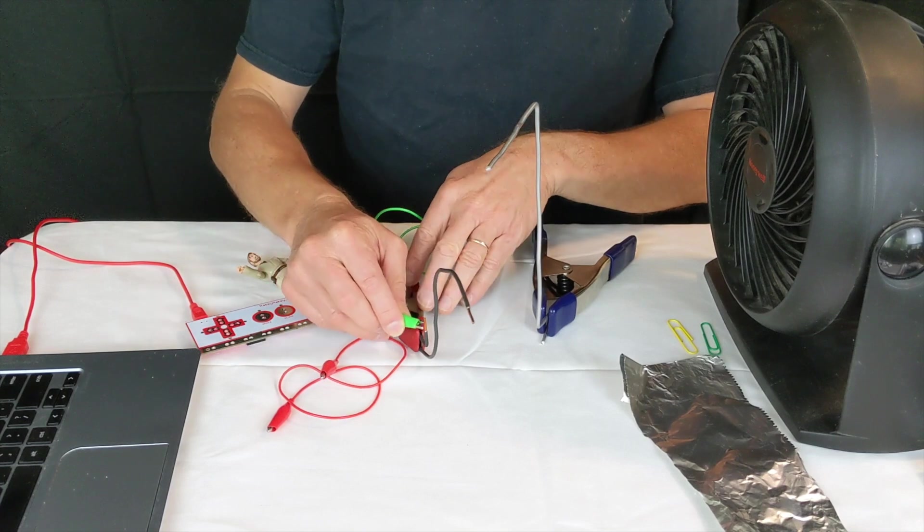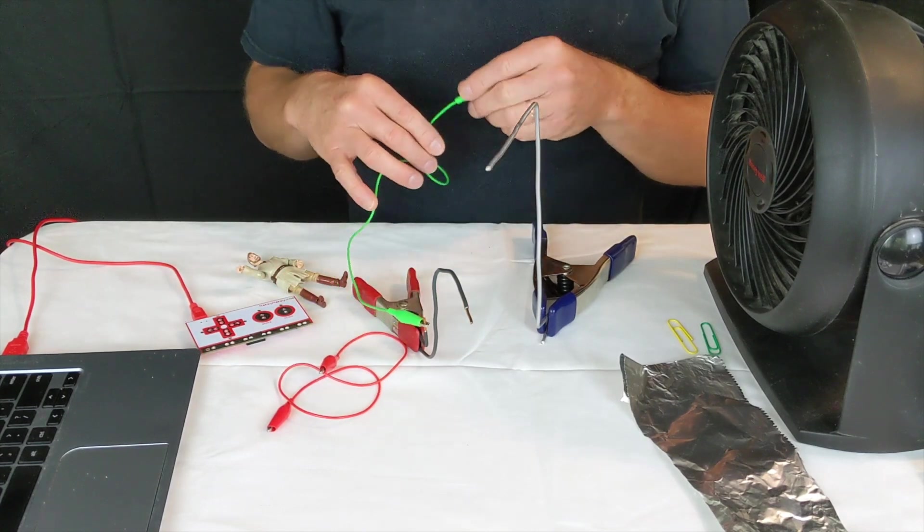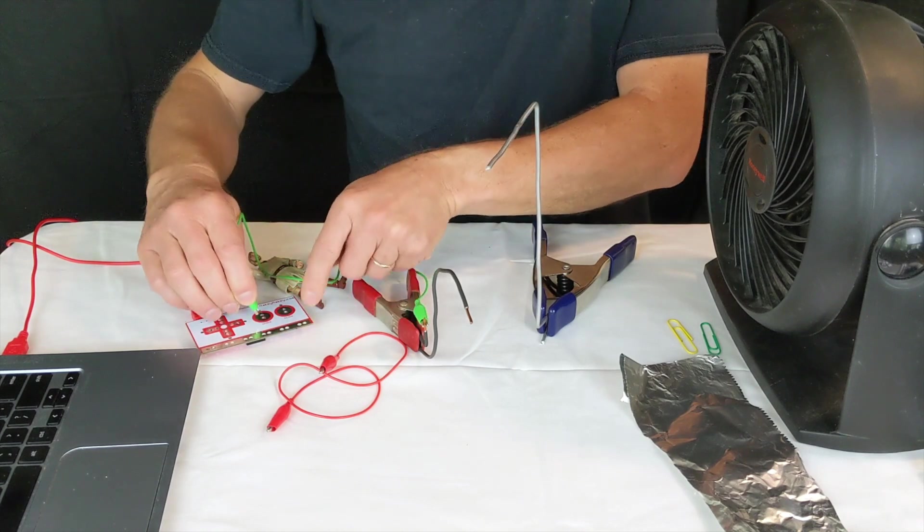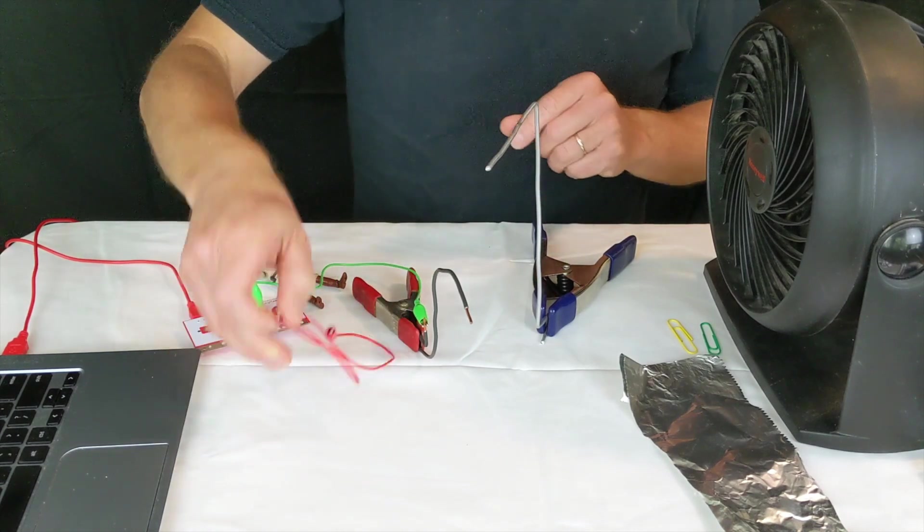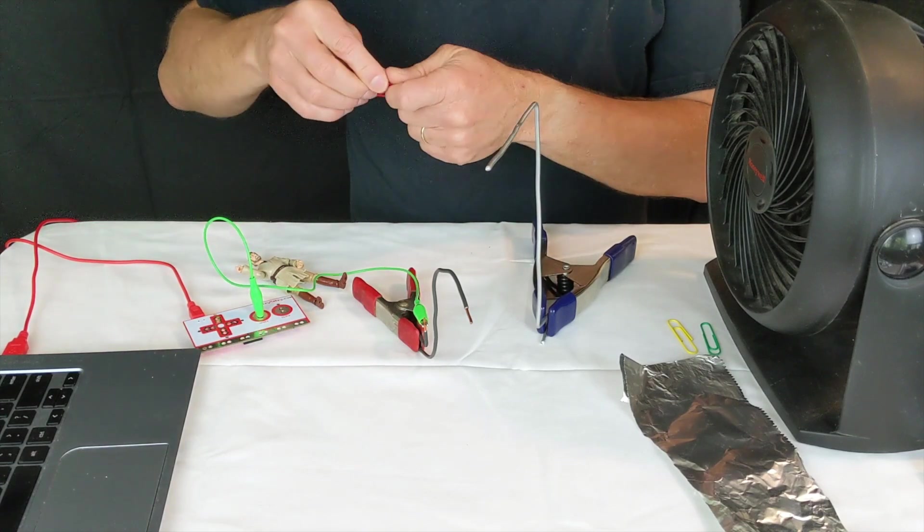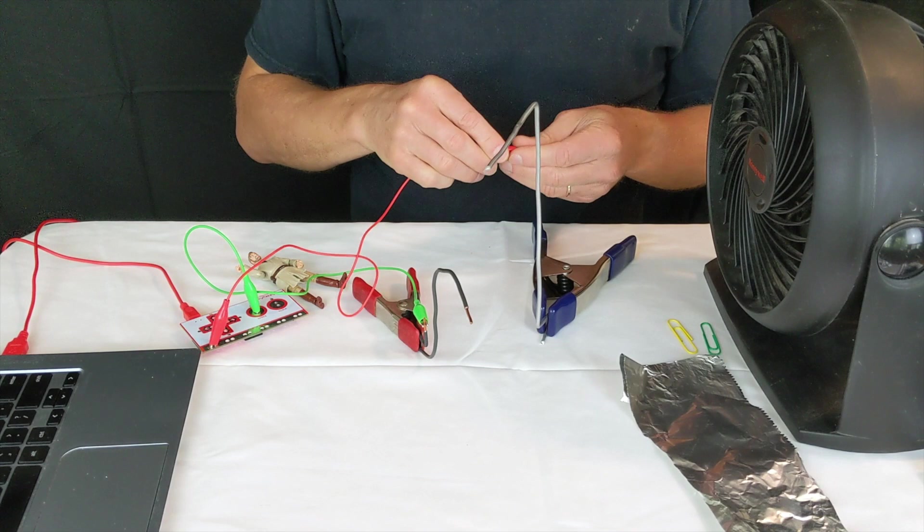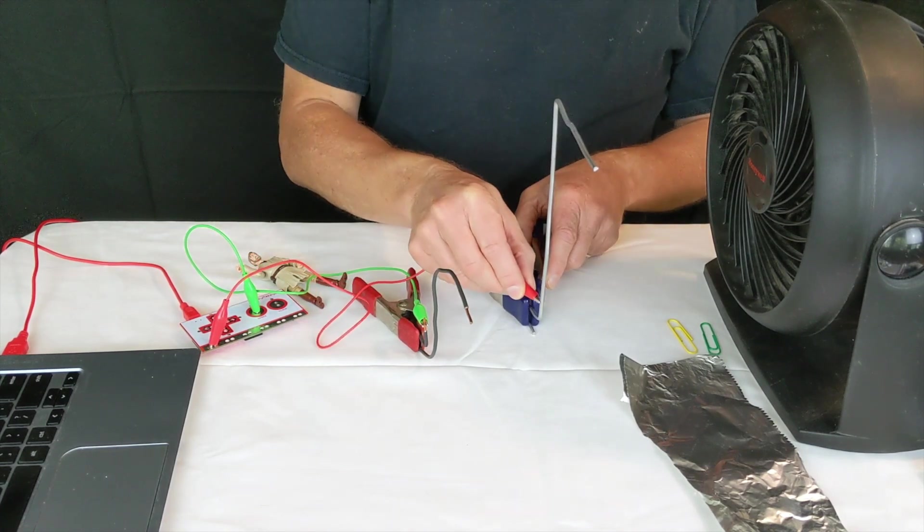So connect one alligator clip to space, and the other alligator clip to earth. Really doesn't matter which one you connect it to as far as the wires here.